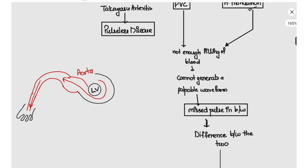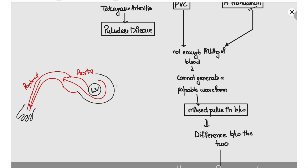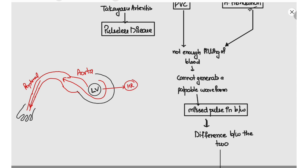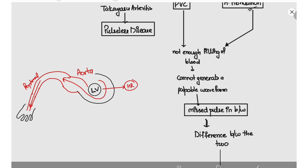Let's say this is the left ventricle, this is the aorta, and this is a peripheral vessel reaching the hand, connected to the aorta. The rate at which this left ventricle is contracting each minute is known as the heart rate, and we can measure it by palpating the apex beat or by auscultating the heart sounds and calculating it over a minute.